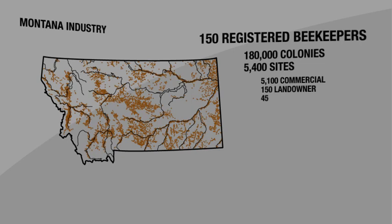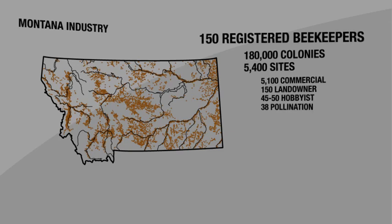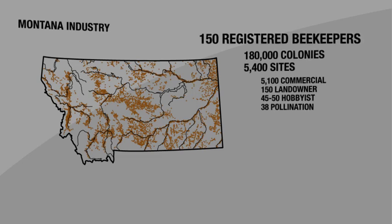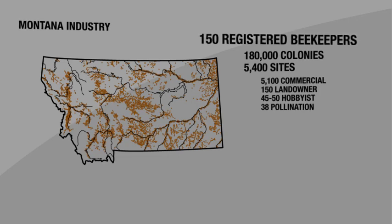5,100 and something of those are commercial sites. There are about 150 landowners, about 45 to 50 hobbyists at any given time, and right now we have 38 pollination sites, most of which are associated with some agricultural research being done by some large agricultural companies up in the Flathead Valley. As I said, there's a lot of beekeeping that goes on in Montana. It's a good place to do it. I hope you guys enjoy it, and I hope you have fun with your bees.